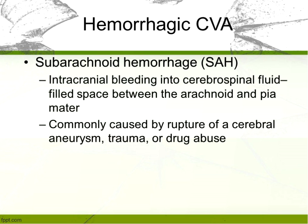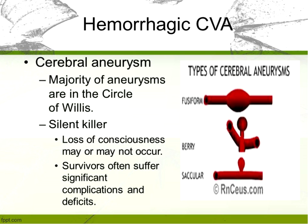A subarachnoid hemorrhage is whenever we have bleeding into the cerebrospinal fluid-filled space between the arachnoid and the pia mater. It is commonly caused by a rupture of a cerebral aneurysm, trauma, or drug abuse.